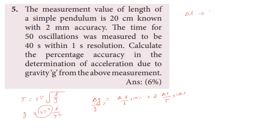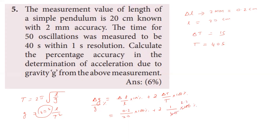Substituting: delta L = 2 mm = 0.2 cm, L = 20 cm, delta T = 1 second, T = 40 seconds. The percentage error = (0.2/20 × 100%) + 2 × (1/40 × 100%) = 1% + 2 × 2.5% = 1% + 5% = 6%. So the percentage accuracy in the determination of acceleration due to gravity is 6 percent.